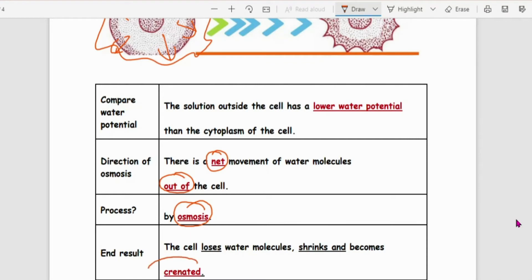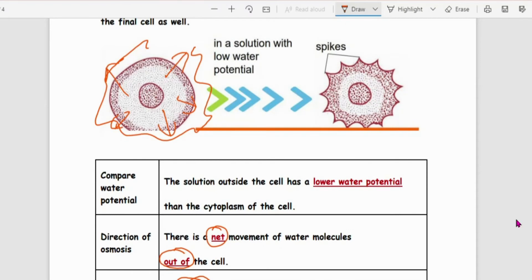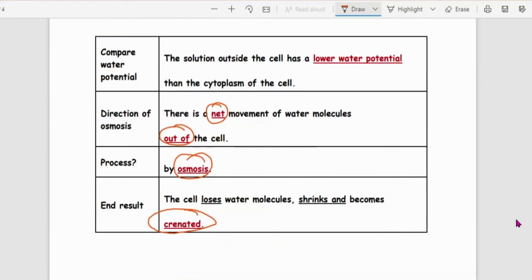It will shrink and become this idea called Crenated. So Crenated is a key term here. Please remember about it. Make sure you know when to use the word Crenated. So when you see the spiky spiky things here, when the animal cell becomes spiky, you use the word Crenated.